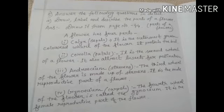A flower has 4 parts. Number 1: Calyx, Sepals - It is the outermost green colored whorl of the flower. It protects the bud. Number 2: Corolla, Petals - It is the second whorl of a flower. It also attracts insects for pollination.